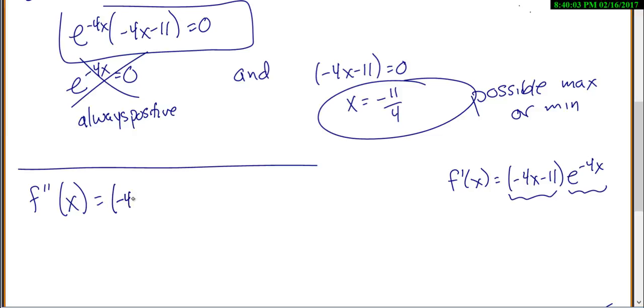So, product rule says do the first without changing anything. Just write the first down times the derivative of the second. So, derivative of the second, e to the negative 4x, that stays exactly the same. But then you always have to times it by the derivative of whatever is up in the exponent. So, the derivative of the exponent is negative 4. Plus the second, so e to the negative 4x, times the derivative of the first. So, derivative of negative 4x minus 11 is just negative 4.